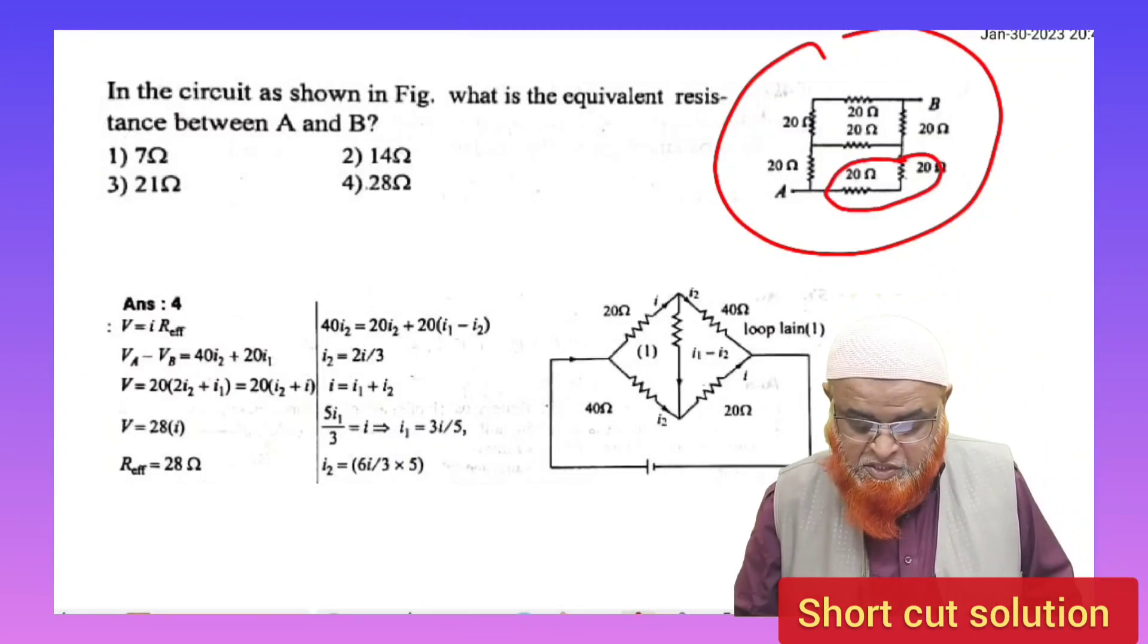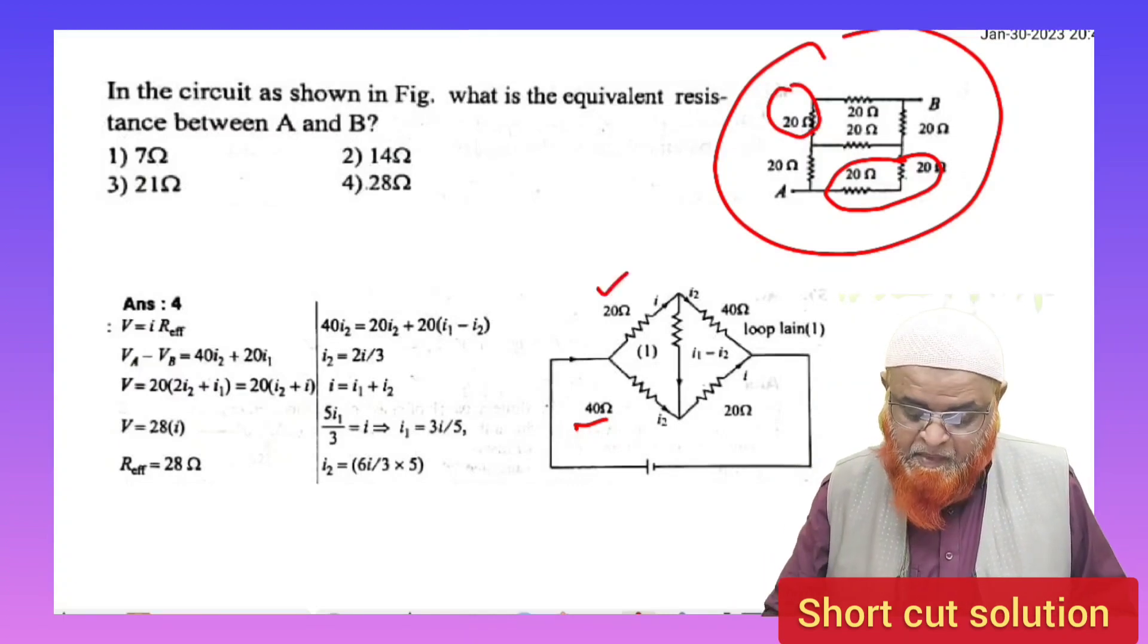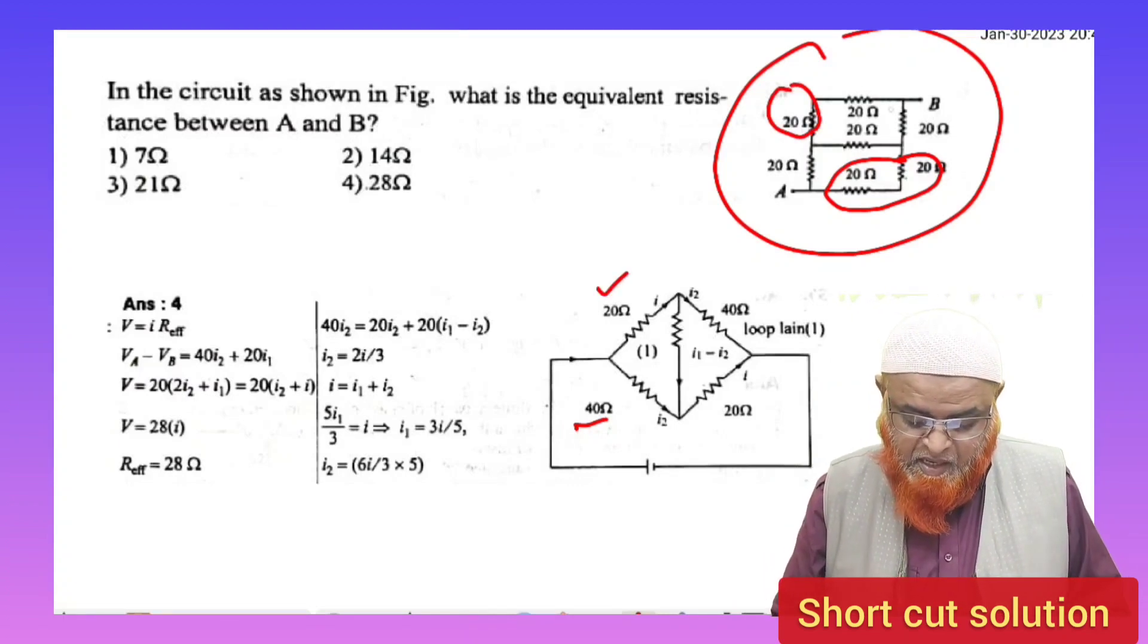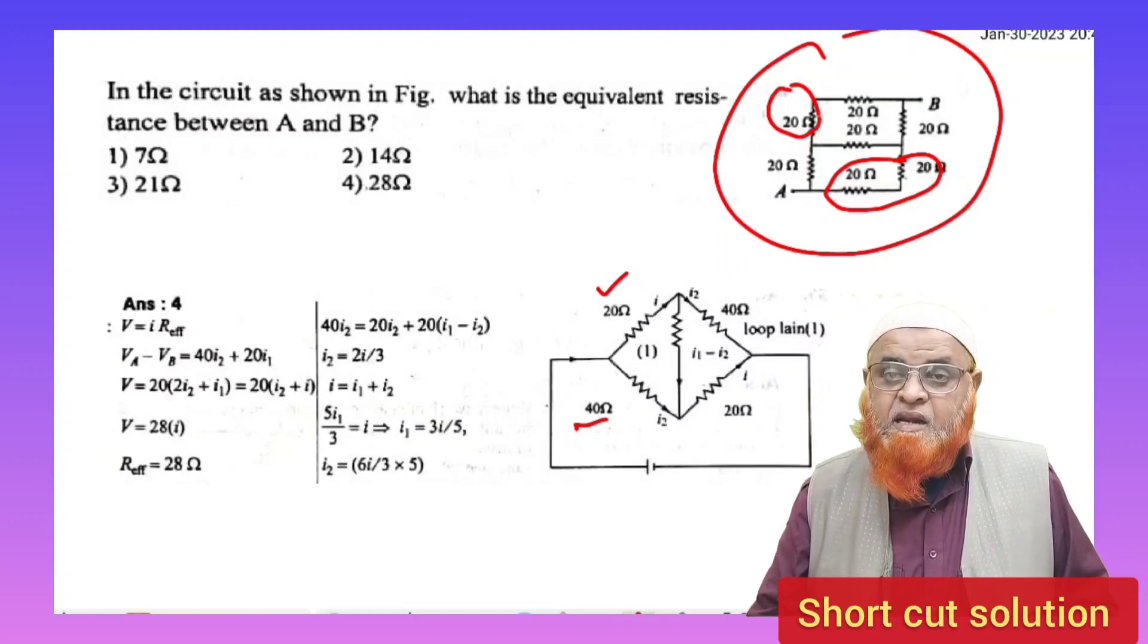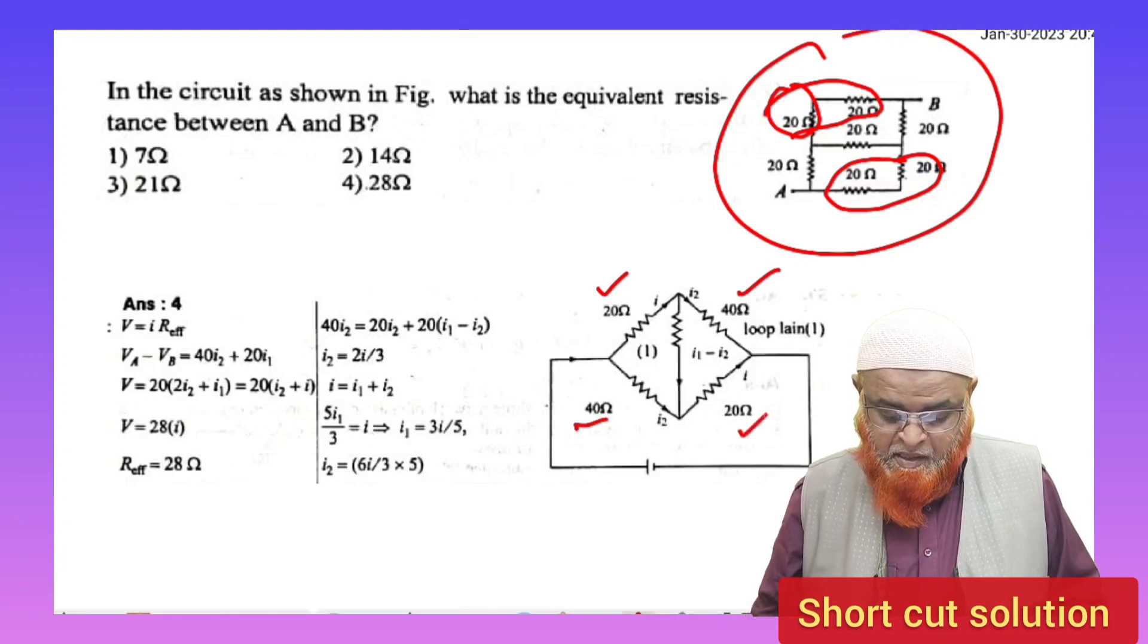If you observe, these 20 and 20 is going to become 40. So here it is 40, and this 20 is separately written here, 20 again. This 20 and this 20 is going to be separately written.